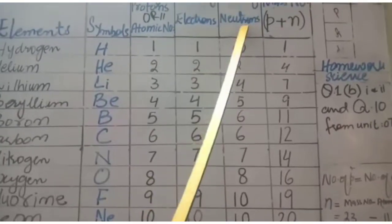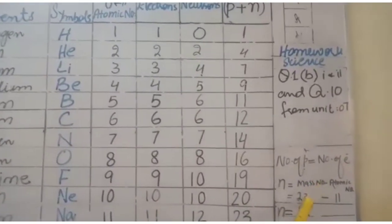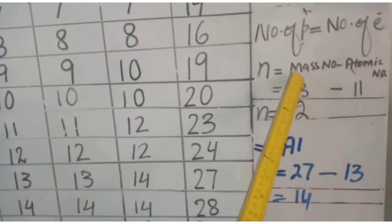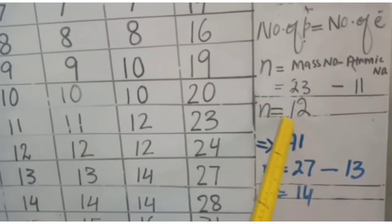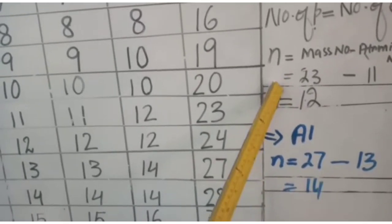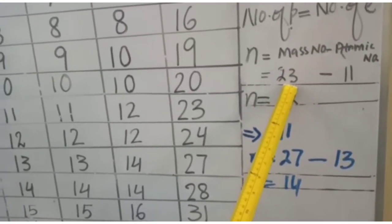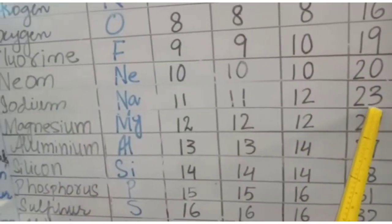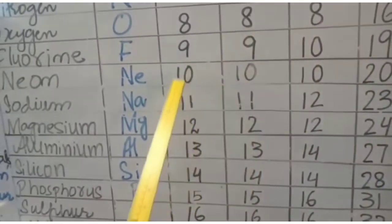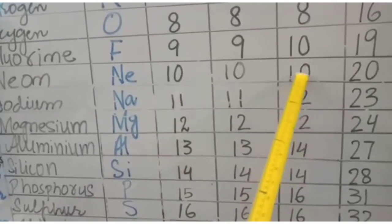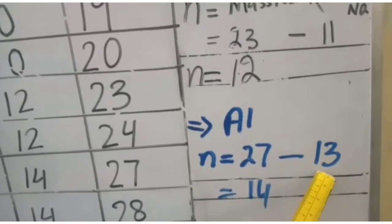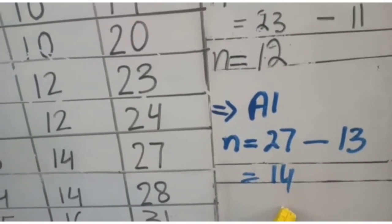Now, how to find the number of neutrons — they are not the same as protons. The formula is: number of neutrons = mass number minus atomic number. You will learn both mass number and atomic number, and then easily calculate the number of neutrons. For example, sodium: mass number is 23, atomic number is 11, so 23 minus 11 = 12 neutrons.